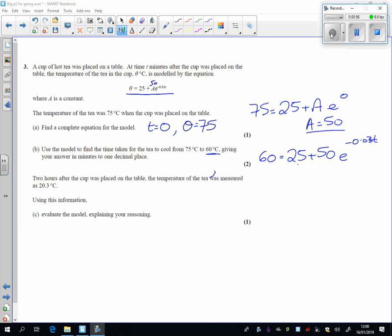Take away the 25, divide by 50, so I've got 35 over 50 equals e to the minus 0.03. Get rid of the e by learning, and then dividing by the minus 0.03. It gives me that T is equal to 11.889, but it says to one decimal place. So T is 11.9 minutes.